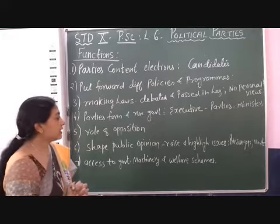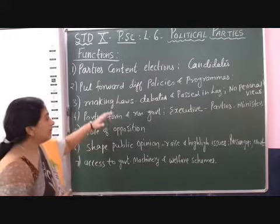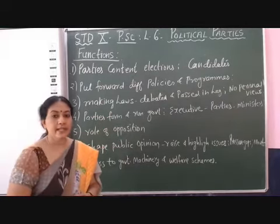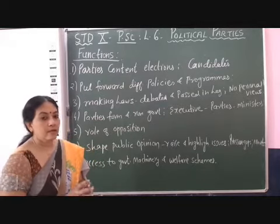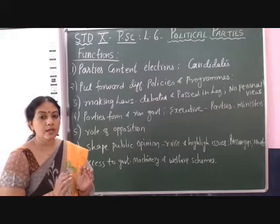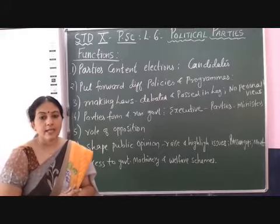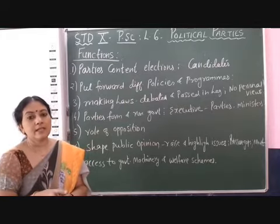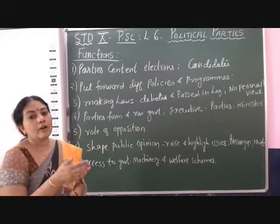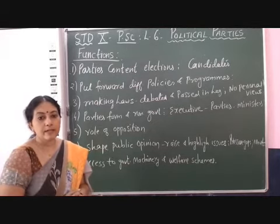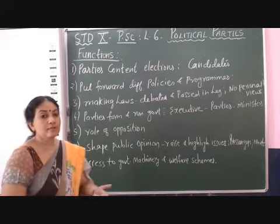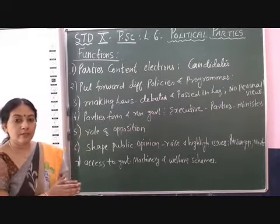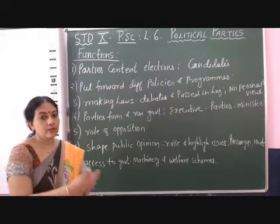The fourth function is that parties form and run the government. Making laws is the legislative function, while forming and running the government is the executive function. The political party chooses some leaders from their own party, trains them, and makes them ministers. These ministers run the government according to the wishes of the political party. So it is the political party which forms the ministry and runs it, and some members of the party are also part of the executive who run the country.